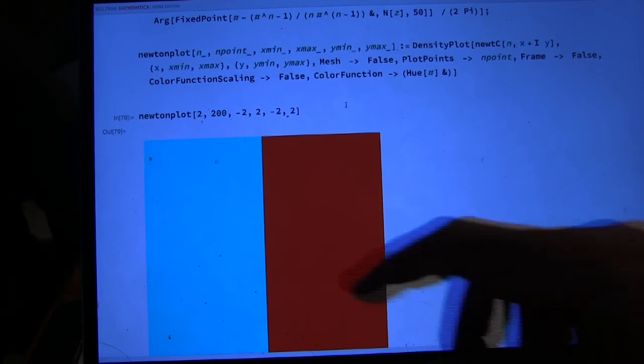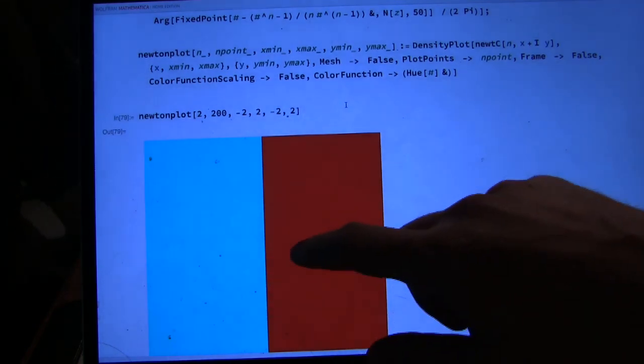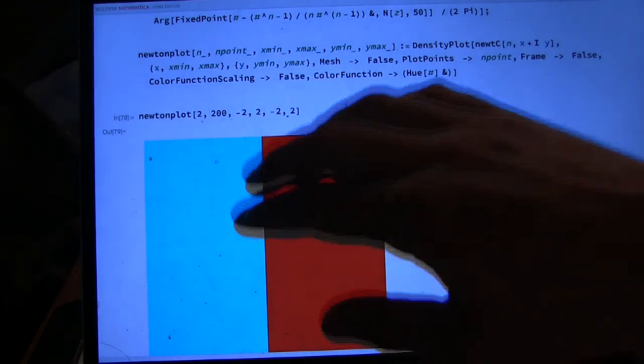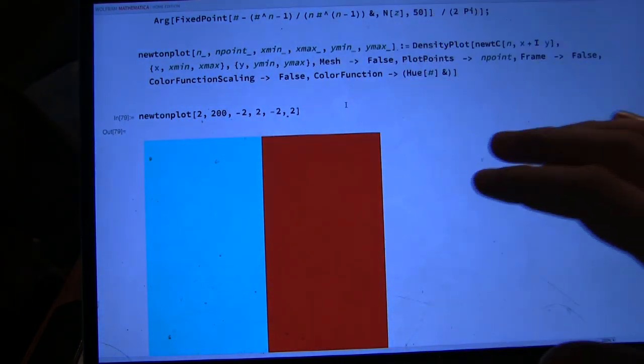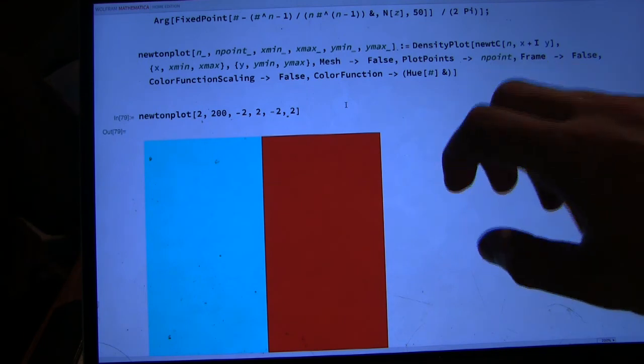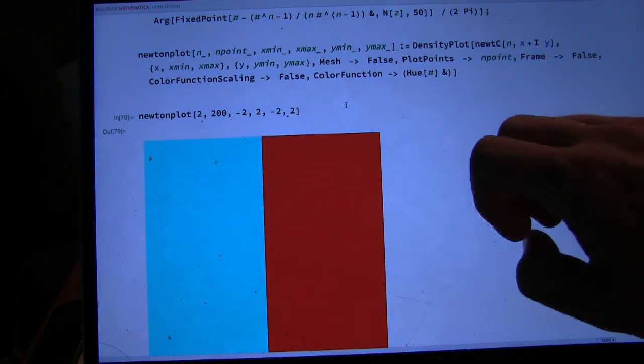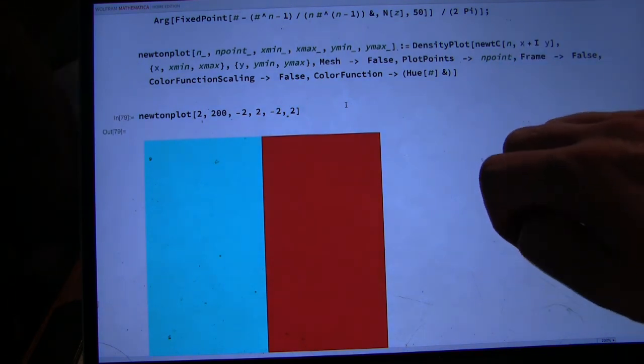And what these maps, what these graphs are showing is if you start, sorry, I got ahead of myself. This is for the map z squared equals one. And that has two roots, plus one and minus one. Right?